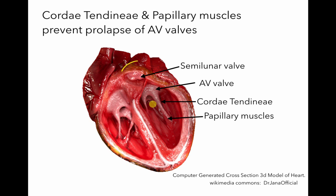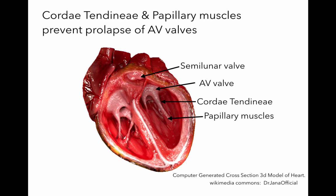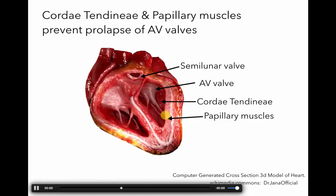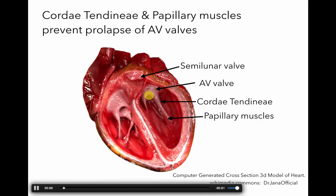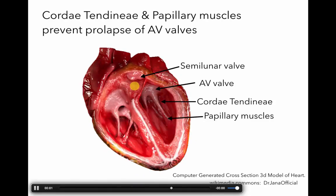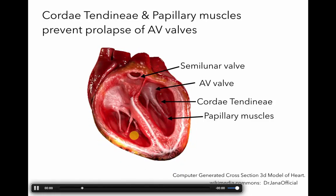There's a Wikimedia Commons animation that demonstrates how the papillary muscles contracting — as the ventricles contract — pull on the chordae tendinae to prevent the AV valves from flying back up into the atrium. You'll also be able to see the semilunar valves opening and blood leaving the ventricle. This animation is courtesy of Dr. Jana Official and is a Creative Commons video — linked on Wikimedia Commons. As the heart contracts, the papillary muscles contract, pulling on the chordae tendinae and keeping the AV valves closed, while the semilunar valves open to allow blood to be ejected from the right ventricle.